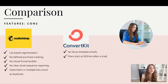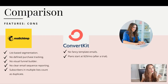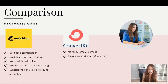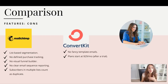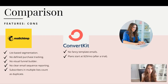Now let's talk about ConvertKit's flaws. Number one: there are no fancy templated emails. If you really want to send beautiful emails despite the numbers — if you just want to ignore conversions — you're not going to love ConvertKit. Also, plans start at $29 a month. You can take a trial, but there isn't a free plan. That's one of the main reasons why everyone starts with MailChimp and doesn't invest in a full-blown tool like ConvertKit.